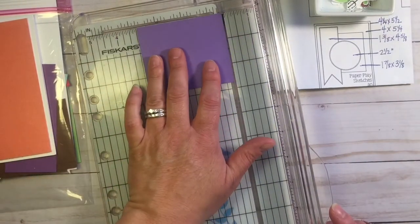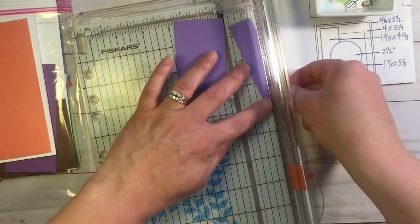Now, here I'm going to cut my purple rectangle to 1⅞ by 3⅛.